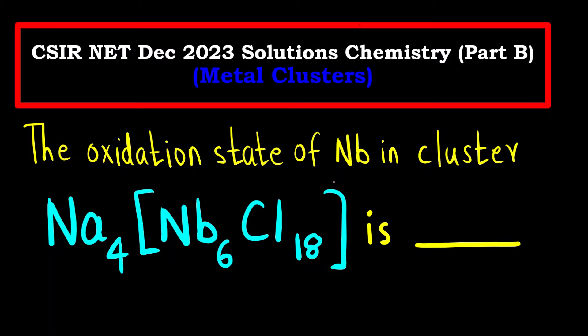You have to find out the oxidation state of niobium. The first question is, should we know the structure of this complex? The answer is no. Do I know the structure of this complex? I also don't know. Can we solve this question without knowing the structure? The answer would be yes. You have to use simple logic.